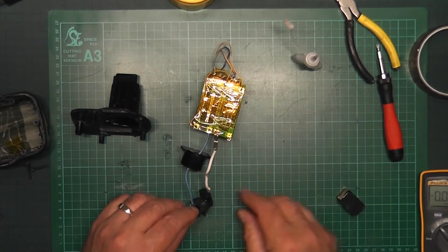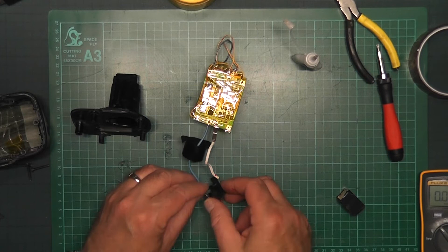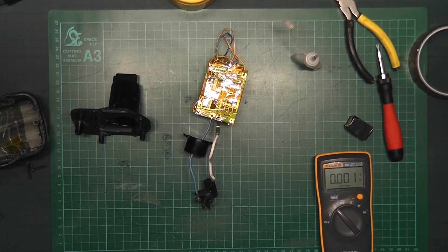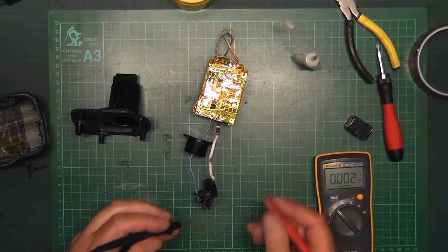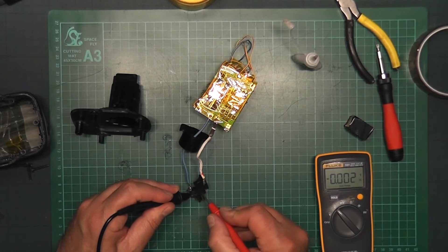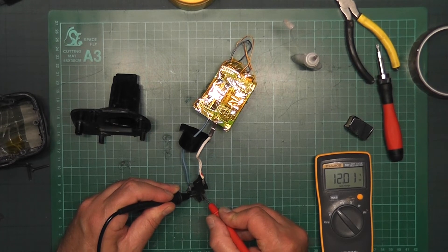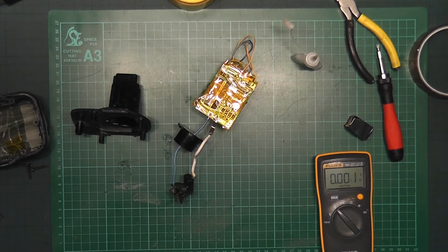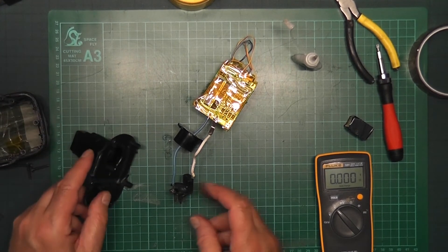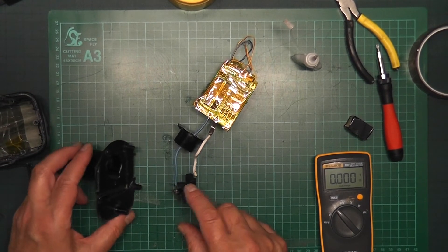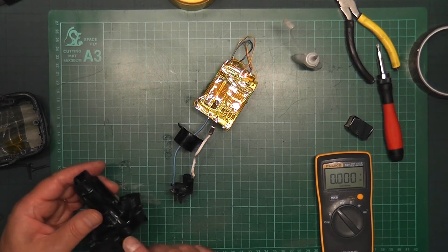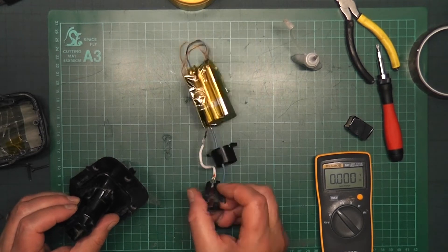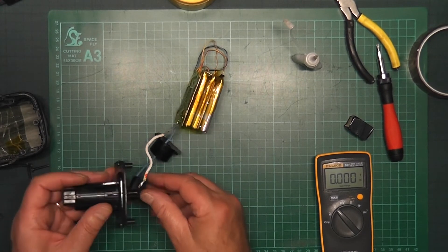And again, after having to desolder and resolder, we'll just test it again. No point putting it back together if it's not working. And you can see there it's still 12 volts. So what we do then is we just have to push this in now. Remember the positive is towards the trigger, so that's the positive side there.